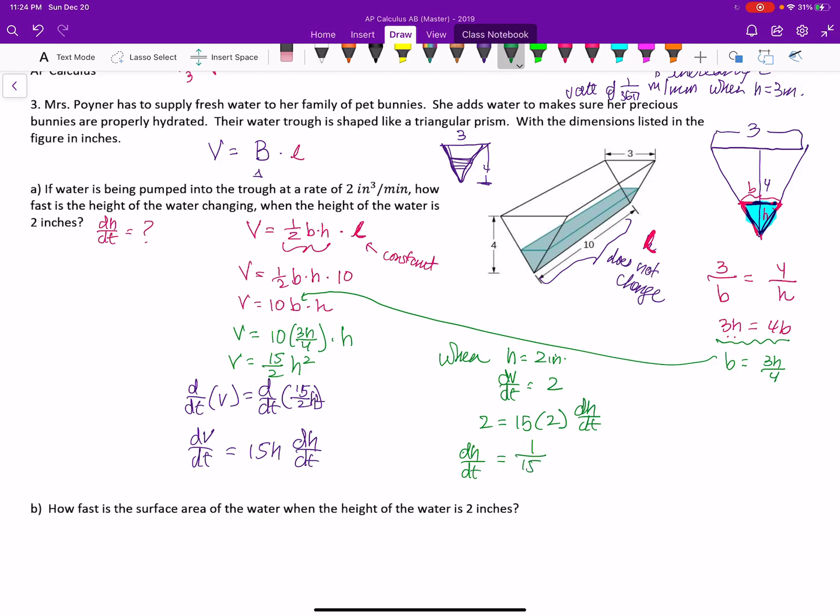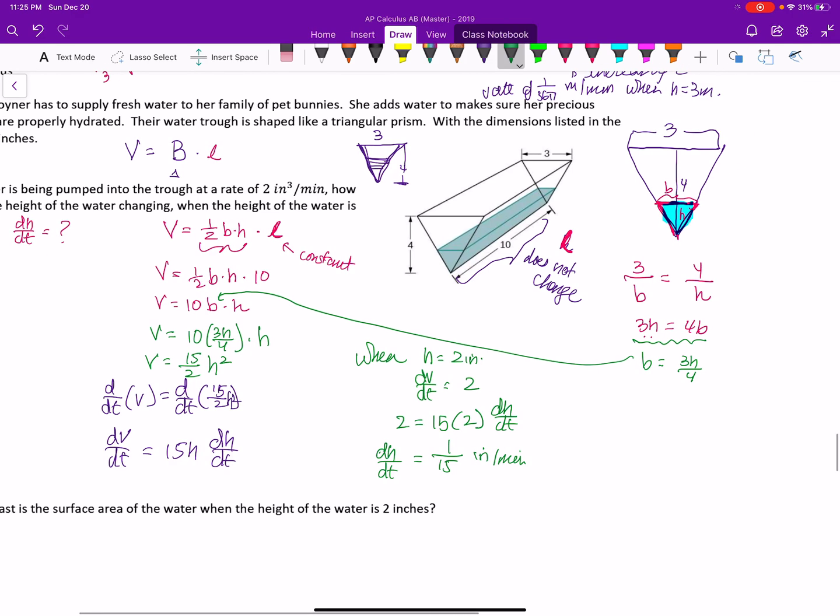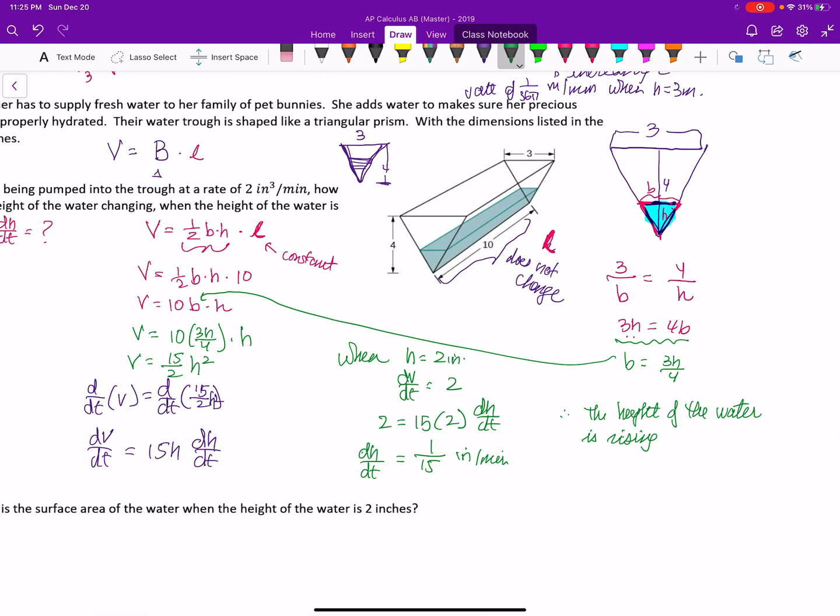So then dH/dt is equal to 1 over 15. It's positive, which makes sense because water is being pumped in at that particular time. So this was inches per minute. So gently putting water in.